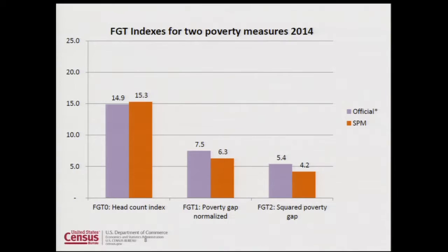I've calculated these FGT indexes for both the official measure and the SPM. For the head count index or poverty rates, we see what we've seen before. With the normalized poverty gaps, the SPM is below the normalized gap of the official measure — capturing the fact that when we include non-cash benefits, even if they're not bringing people over the poverty line, they are bringing people up from the bottom of the distribution. The same result holds with the squared poverty gaps.